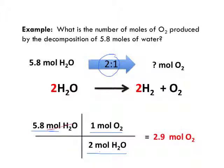You notice that that neatly cancels out our moles of water, and we'll be left with moles of oxygen, which is what our question is asking for. And so that happens to be 2.9. So really, what we're going to divide, of course, 5.8 by 2, and that gives us 2.9 moles of oxygen.